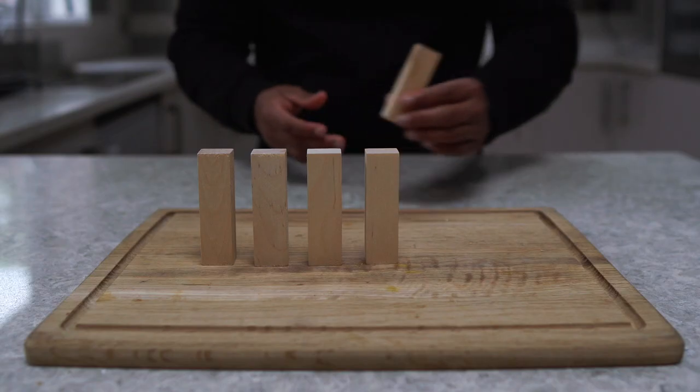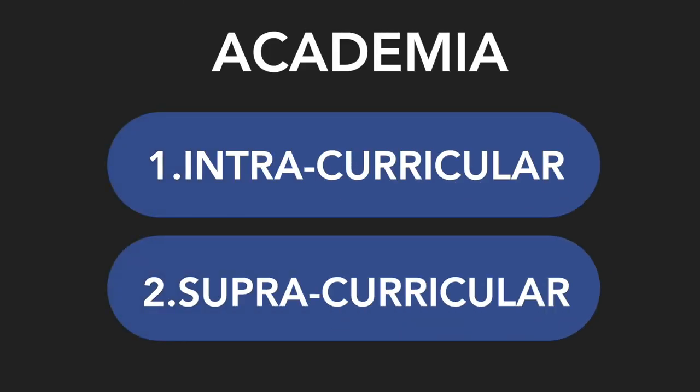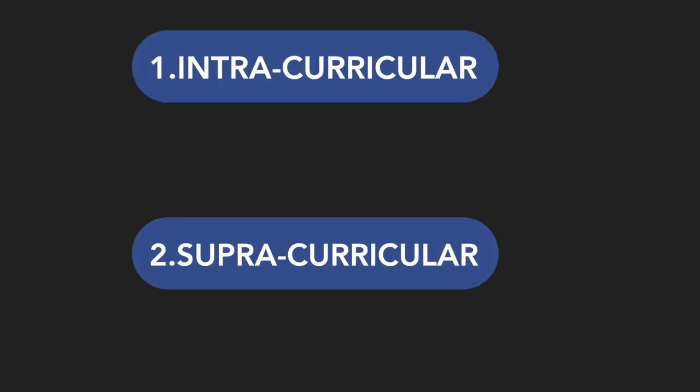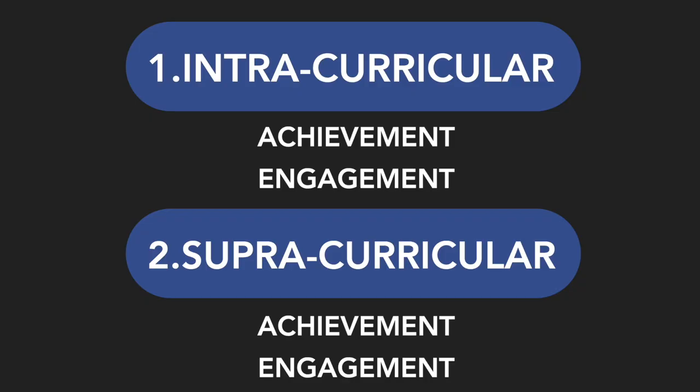The next pillar in our framework is academia, and this pillar is something that you can modify to best suit your achievements and what you have to share. Basically, the academia pillar can be split up into two broad categories: intracurricular and supracurricular. These things can be further split up into achievement and engagement. Let me now explain this in a little bit more detail, starting off with intracurricular academia.